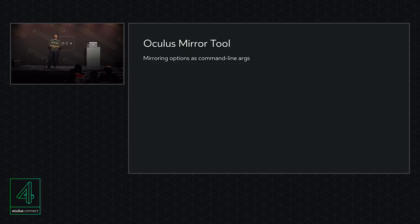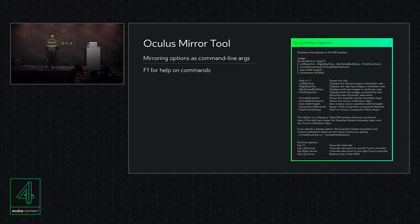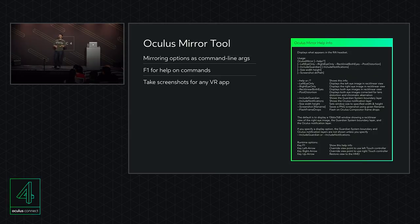Next, the Oculus Mirror tool. The mirror tool has been shipping for the past few versions of our runtime, sitting right next to the Oculus Debug tool. We've been adding more options over time; more recently we've added command-line arguments to customize the mirror tool's presentation. Hit F1 to get a pop-up describing all options in detail. Two recent features: the ability to take screenshots regardless of what the VR application supports — snap a screenshot and save it to your hard drive using all the tool's customization options.